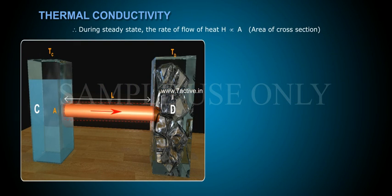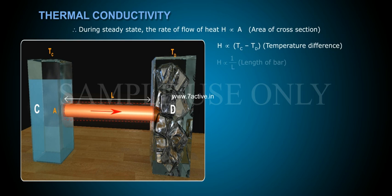During steady state, the rate of flow of heat, H, is directly proportional to A (area of cross section), directly proportional to Tc minus Td (temperature difference), and directly proportional to 1 by L (length of bar). H is equal to K A into Tc minus Td by L.